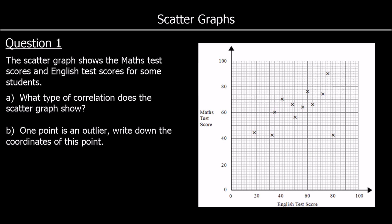Here's a question for you to try. A scatter graph shows the maths test scores and English test scores for some students. What type of correlation have we got? We can see we've got a positive correlation — as one goes up, the other one goes up. So we would be able to draw a line of best fit, trying to get roughly the same number of points on both sides and minimizing the distances from the points to the line. It's a positive correlation.